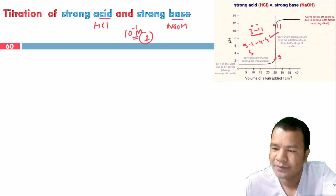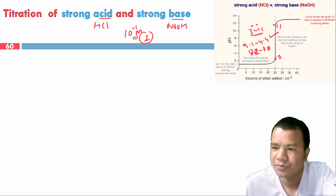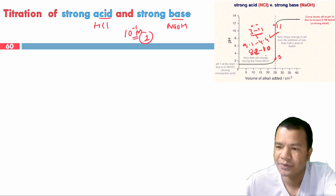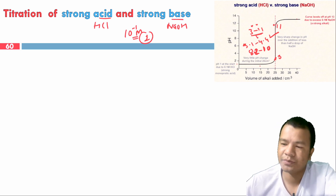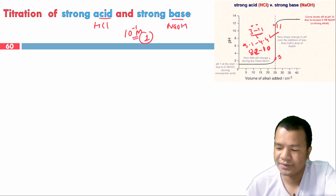We can also use phenolphthalein with a range of 8.2 to 10. Both methyl orange (3.1–4.4) and phenolphthalein (8.2–10) fall within the steep rise range of 3 to 11, so we can use these two indicators.